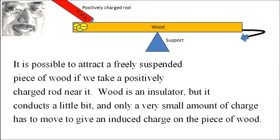It is possible to attract a freely suspended piece of wood if we take a positively charged rod near it. Wood is an insulator but it conducts a little bit. And only a very small amount of charge has to move to give an induced charge on the piece of wood.